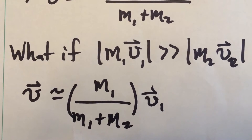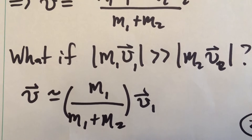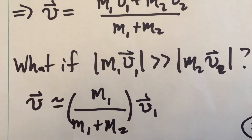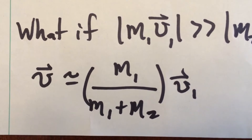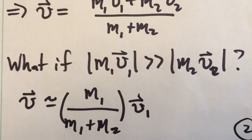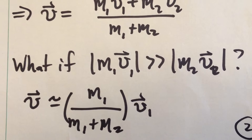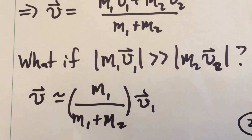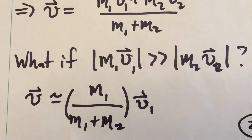As an example of a useful simplification, if the initial momentum of particle one is much, much greater than the initial momentum of particle two, then we can approximate the final velocity vector as simply the initial momentum of particle one divided by the total mass. This condition can be satisfied if, for example, the initial velocity of particle two is zero, or if the mass of particle two m2 is much smaller than m1.